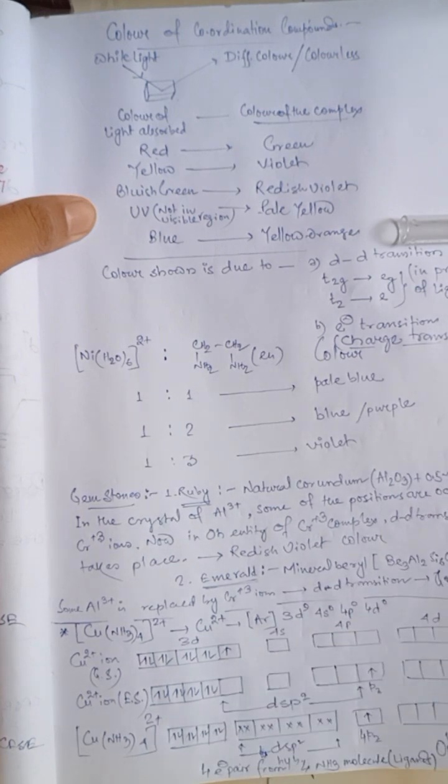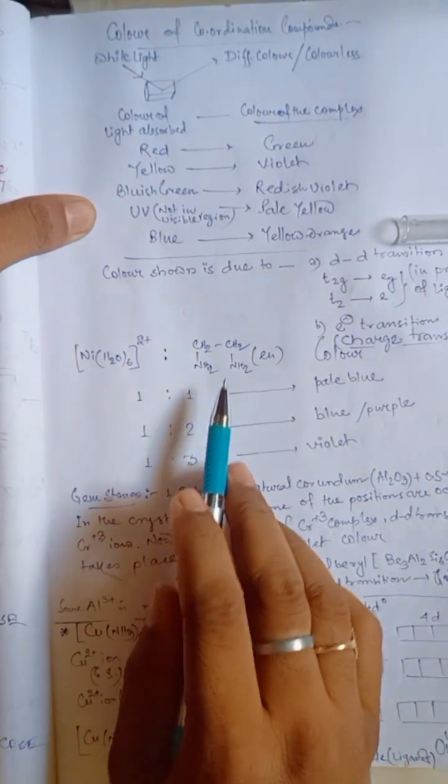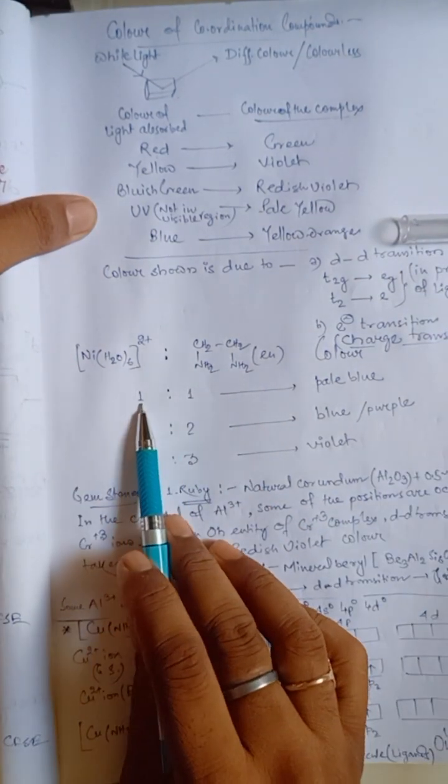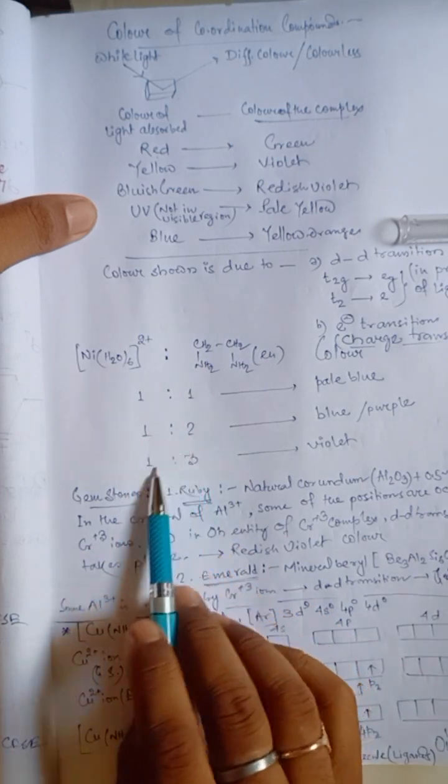But in this solution, if we add some quantity of ethylene diamine in a particular ratio, that is maybe 1 is to 1 or maybe 1 is to 2 or maybe 1 is to 3, we get different colors.